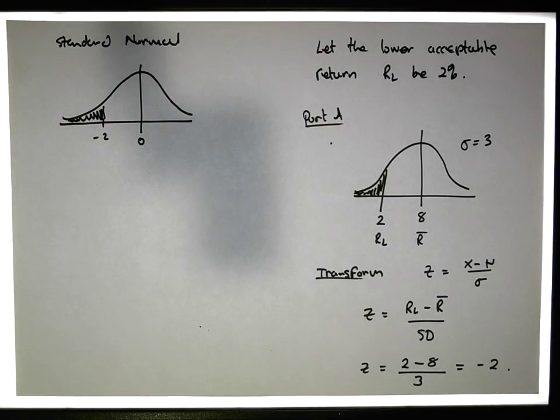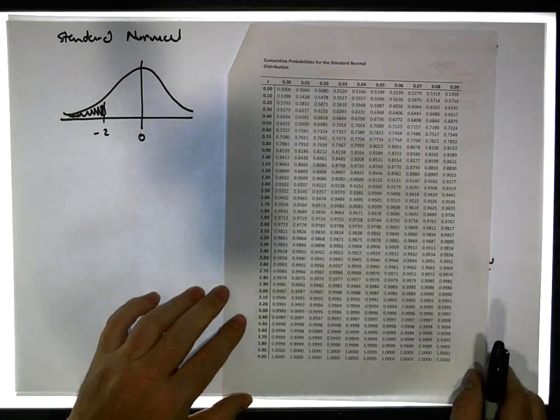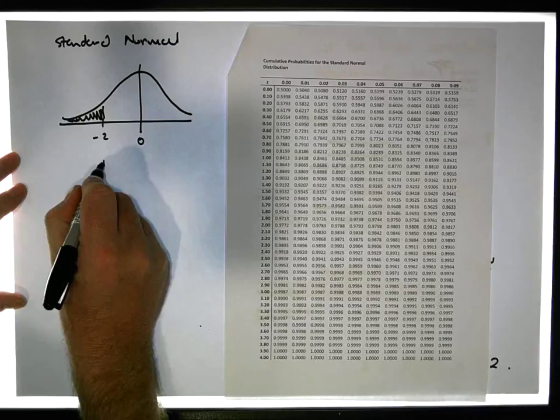Now, I've set tables that give us cumulative areas for positive Z scores. But basically, if we want to calculate the area in a tail, we're always going to have to take away from one in this case.